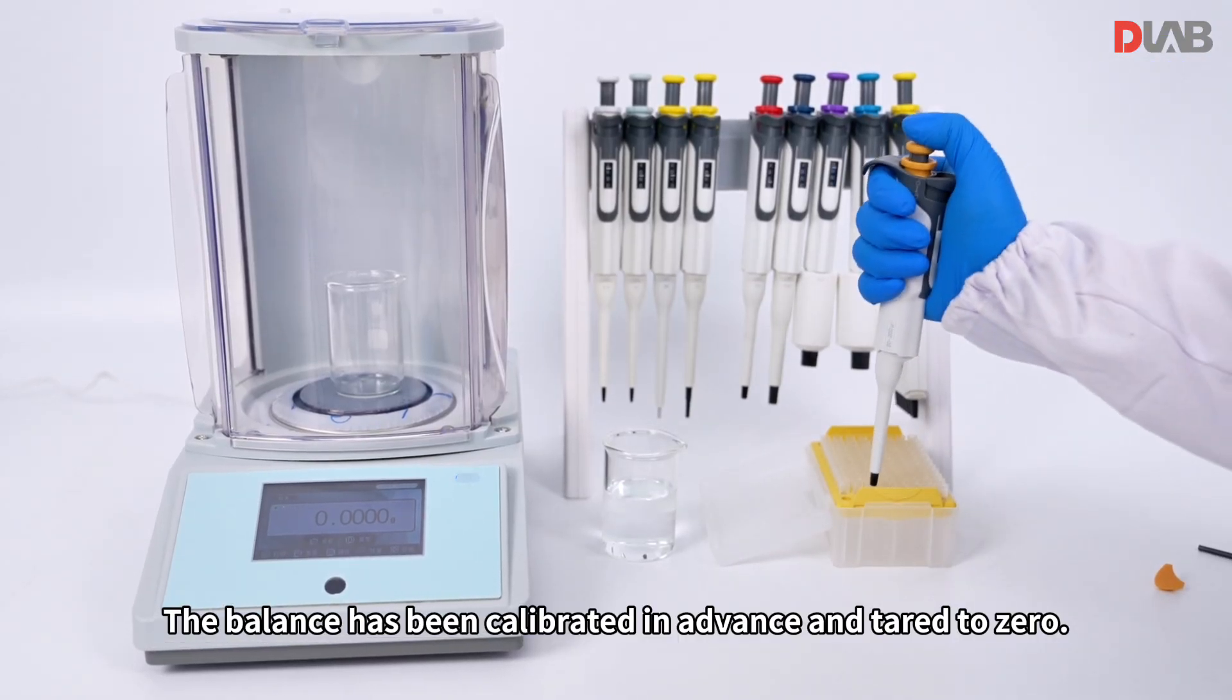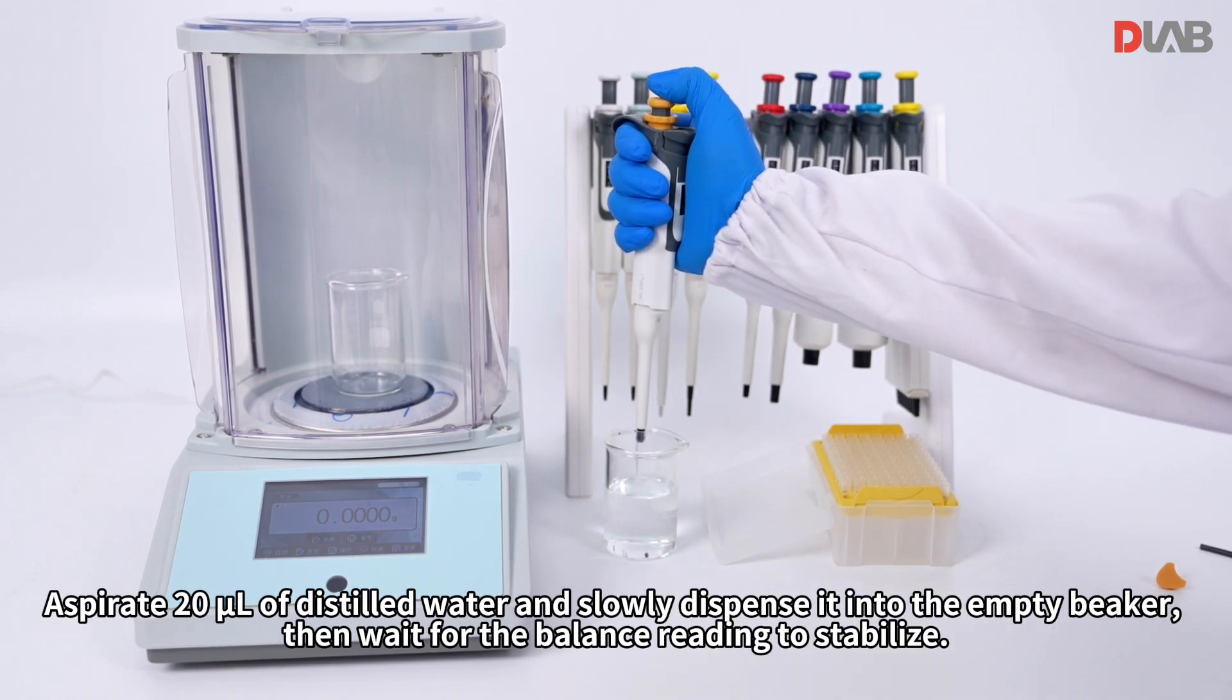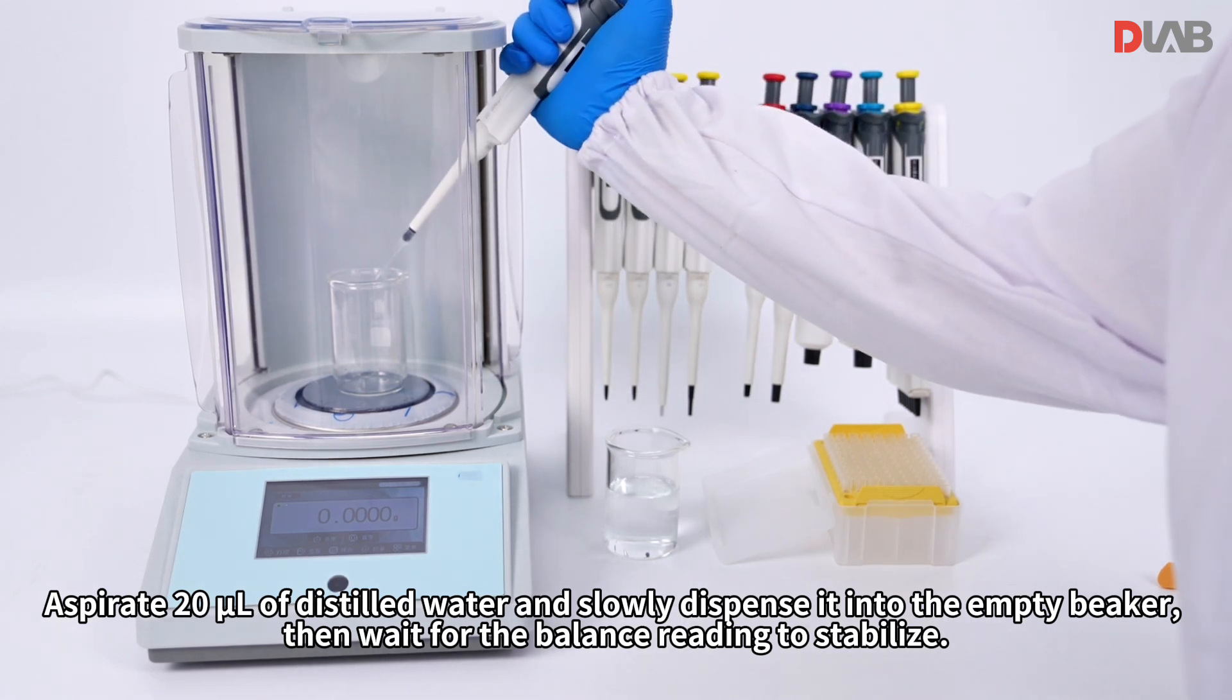The balance has been calibrated in advance and tared to zero. Aspirate 20 microliter of distilled water and slowly dispense it into the empty beaker, then wait for the balance reading to stabilize.